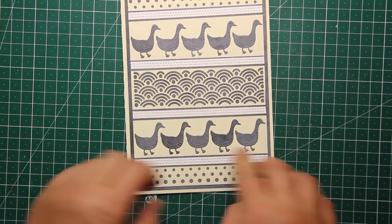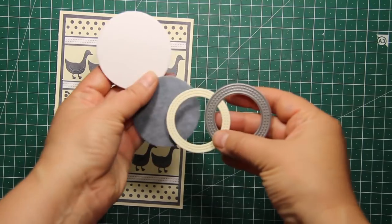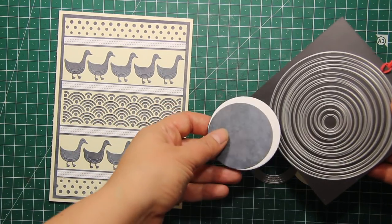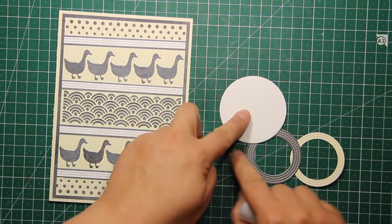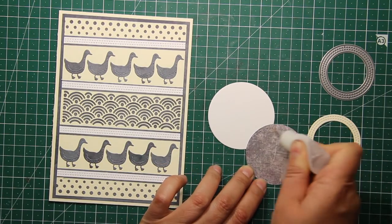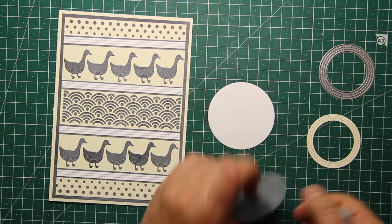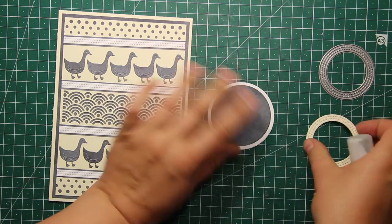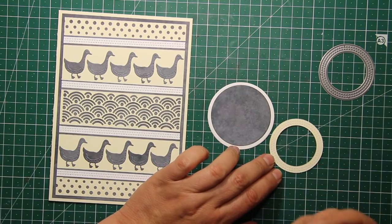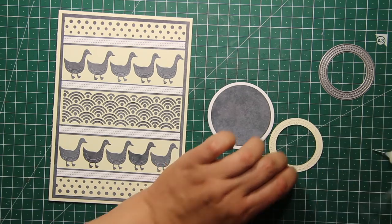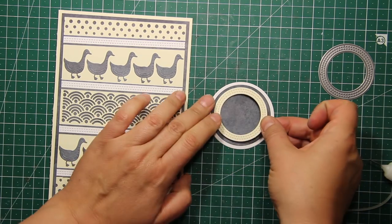Now the only thing my card is missing is a focal image. So I have decided to create a frame using the same colors of cardstock and I'm also using those set of circle dies as well as a double stitched frame. So I'm assembling that circle the same way I assembled the card. I'm sticking down the blue piece on top of the white one and then the cream frame on top.